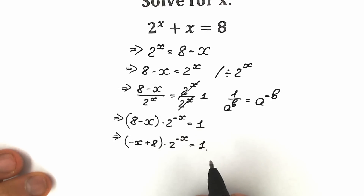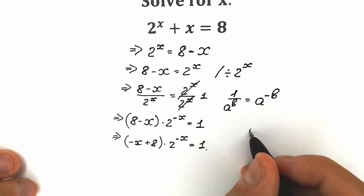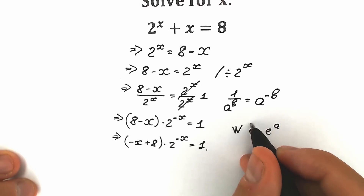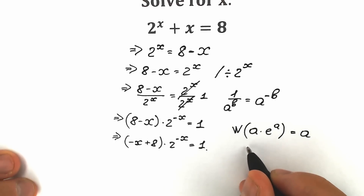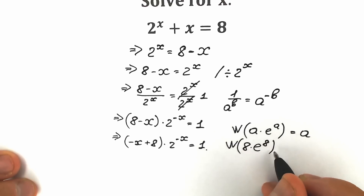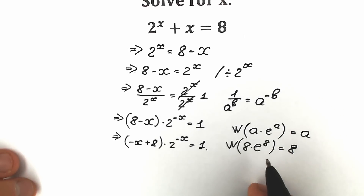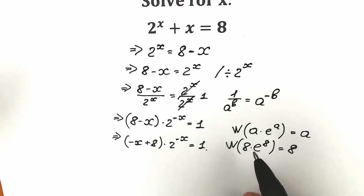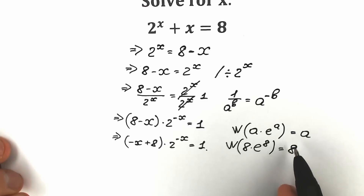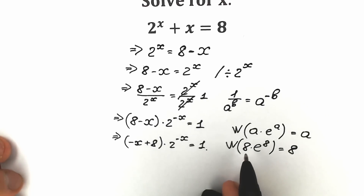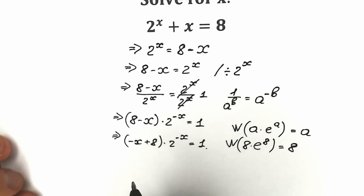Right now we need to know a really great function called the Lambert W function. For those who don't know about this function, I'll explain it in simple words. If we have an expression like a times e to the power a, when we apply the Lambert W function to this expression, we get only a on the right side. For example, Lambert W of 8 times e to the power 8 gives us 8. The 'a' can be any constant or expression — it doesn't matter.